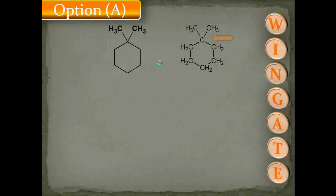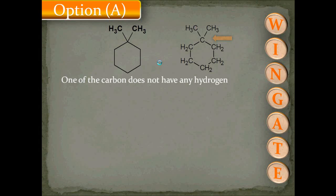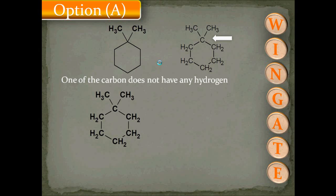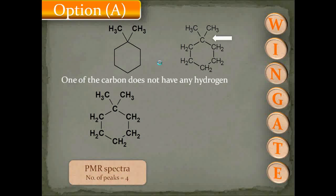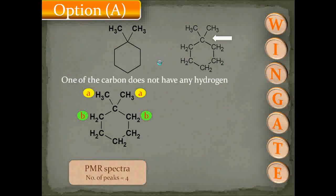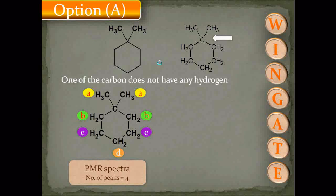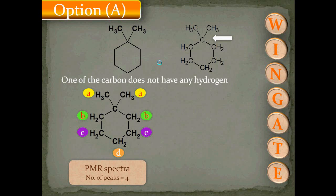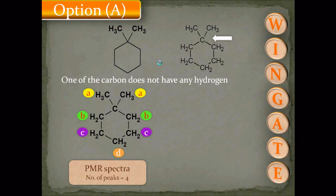For option A, 1,1-dimethylcyclohexane, one of the carbons does not have any hydrogen. The PMR spectra for this molecule shows 4 peaks: protons indicated by A are on the side chain (1 signal), protons indicated by B are ortho to the side chain (1 signal), and protons indicated by C are meta to the side chain (1 signal), plus one more, giving a total of 4 PMR signals.